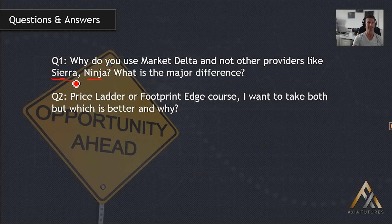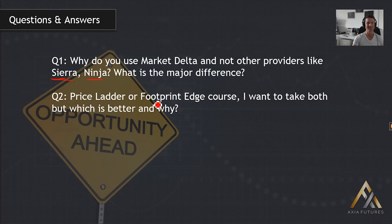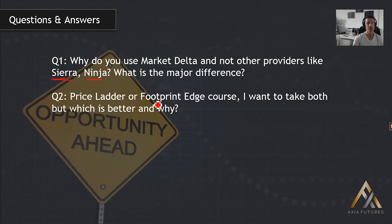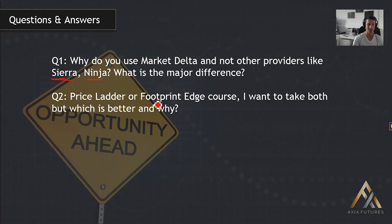A question from a lady asking whether she should take the price ladder or footprint edge course first, and what's the difference between the two tools. The footprint tool ultimately summarizes what's occurring on the price ladder. The price ladder can be very quick — you can't always see exactly what's going on, how much volume is being traded between buyers and sellers, and the interaction can be confusing. For that reason, I prefer to use the footprint tool as a confirmation more than anything. As a trader, my eyes are always on the ladder first and foremost, but when I want to double-check the interaction, the footprint tool is there as a very nice summary.